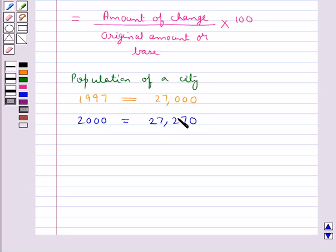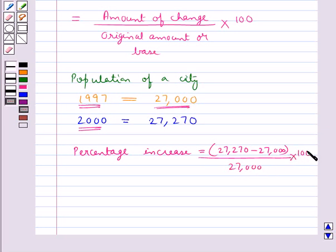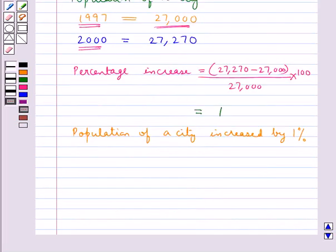As you can see, there is an increase in the population from 1997 to 2000. So the percentage increase is given by the amount of change, which is 27,270 minus 27,000, upon the original amount of 27,000, into 100. This comes out to be equal to 1. So we say that the population of the city increased by 1%. This completes the session.